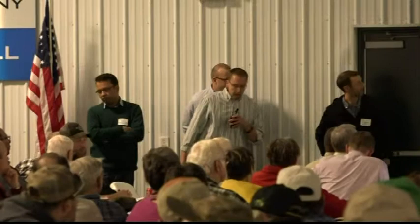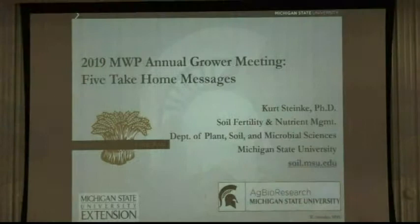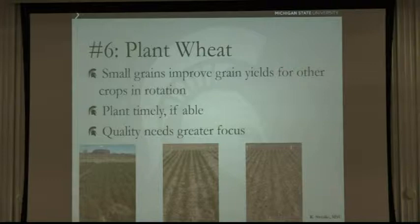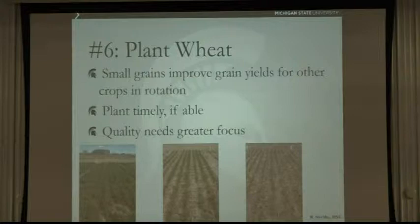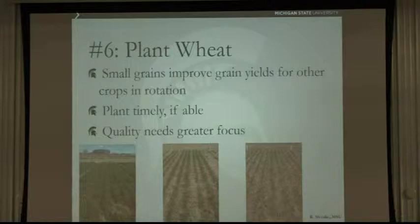Kurt Steinke here — Jody asked what we've learned over the last several years. I wanted to give five take-home messages, but since everyone pads numbers by 20%, I'll give six. Number one: plant wheat. It seems simple, but small grains increase crop diversity. The strength of Michigan agriculture is its crop diversity, which drives yield potential. By planting wheat, we do increase our corn and soybean yields.